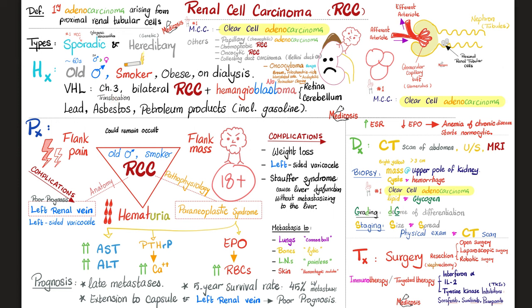Another risk factor is the congenital disease von Hippel-Lindau, which involves a translocation on chromosome 3 — remember VHL: three letters, chromosome three, RCC: three letters. This disease is brutal — it causes renal cell carcinoma in both kidneys, and also tumors in the retina and cerebellum. I can't walk, I can't see, and my urine has hematuria.